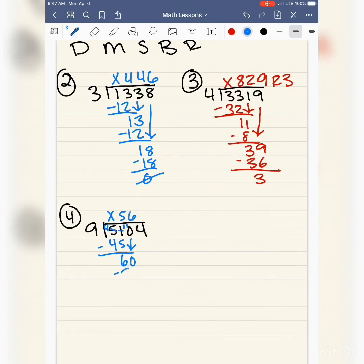How many times? 6. Very good. 6 times 9 is 54, and I have a remainder of 6. So I bring down my 4. 9 will go into 64 seven times. 7 times 9 is 63, and I have 1 left over. So my answer is 567 with a remainder of 1.